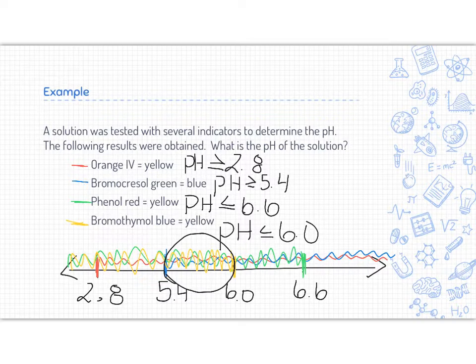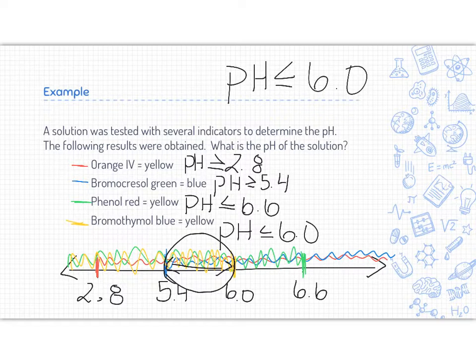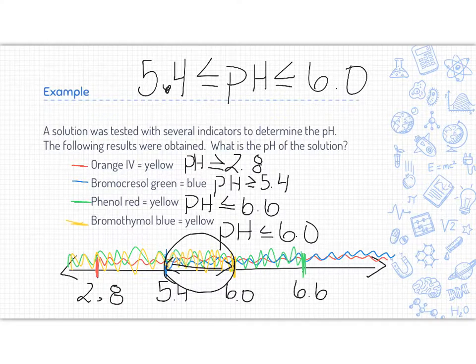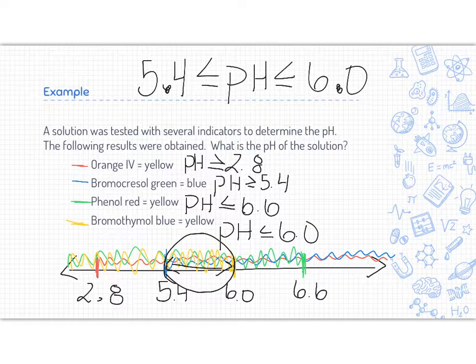So what we can say is that the pH of our solution must be within this range for all of these colors to match up. So we'll write that like we would in math. The pH has to be less than 6, but greater than or equal to 5.4. So we can use this information to create a bit of a number line to then find the pH range that is possible for our solution.